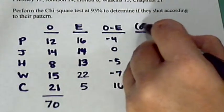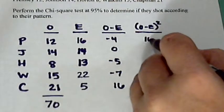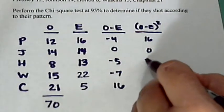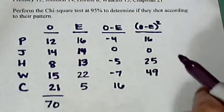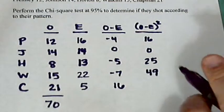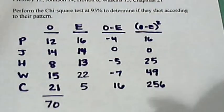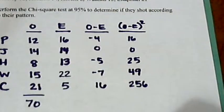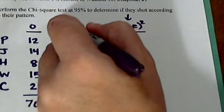And we're going to square these numbers. 16, 0, 25, 49, 256. We're going to make one more column. We're going to take these numbers and divide by the expected.